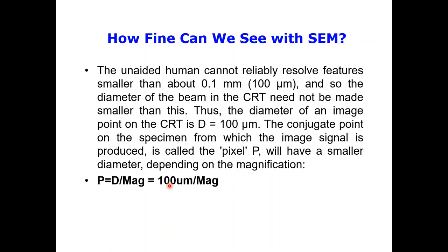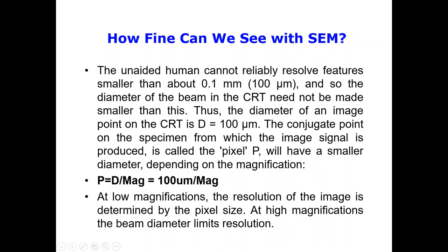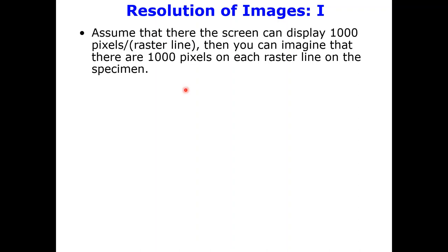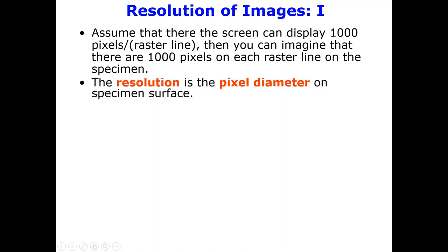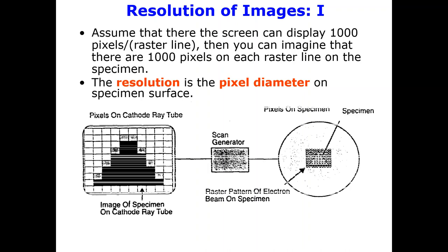At low magnifications, the resolution of the image is determined by the pixel size. At high magnifications, the beam diameter limits the resolution. Assuming the screen can display 1000 pixels per raster line, you can imagine 1000 pixels on each raster line on the specimen. The resolution is the pixel diameter on the specimen surface, as shown in the diagram with the raster scan pattern of the electron beam on the specimen.